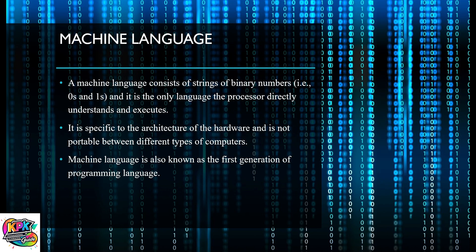Machine language consists of strings of binary numbers — zeros and ones. It is the only language that the processor thoroughly understands and executes. The CPU doesn't understand high-level languages, so anything high-level requires a conversion process before the CPU can interpret and execute it.